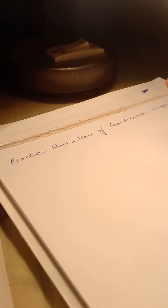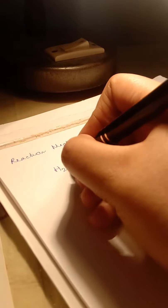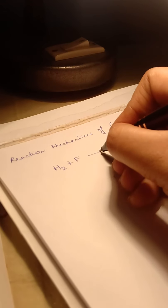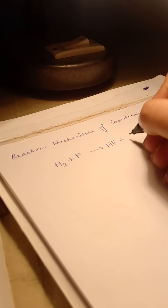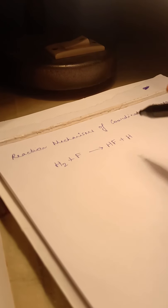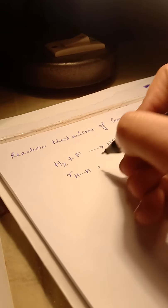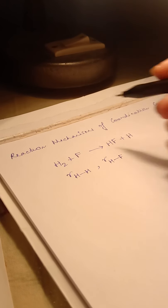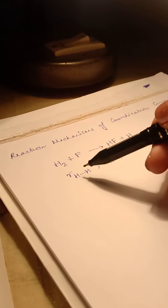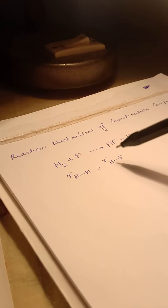Let us consider the very simple reaction of H2 plus F gives HF plus H. If you consider this, which are the two bond lengths which are important: RHH and RHF. As the reaction progresses, this HH bond will be broken and HF bond will be formed. There will be a change in these two factors.